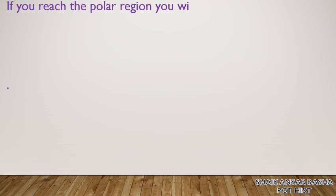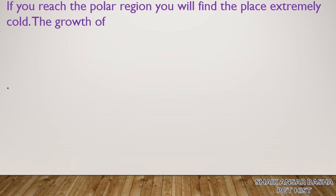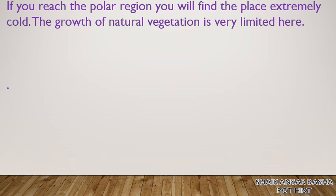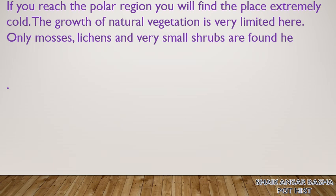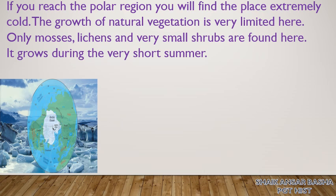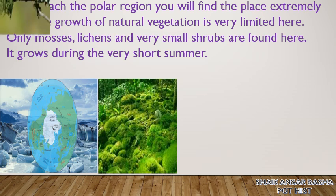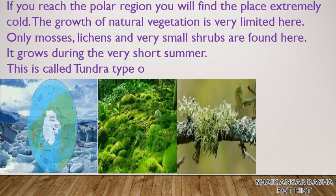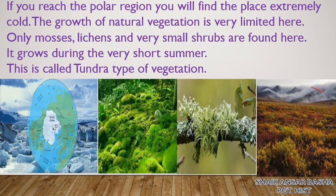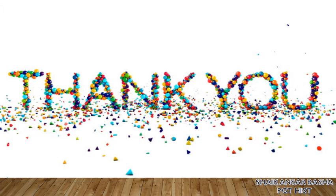If you reach the polar region, you will find the place extremely cold. The growth of natural vegetation is very limited here because of extreme cold conditions. Only mosses, lichens, and very small shrubs are found here, and they grow during the very short summer. This is called tundra type of vegetation, which is found in the polar region of the northern part. Thank you very much for patient watching.